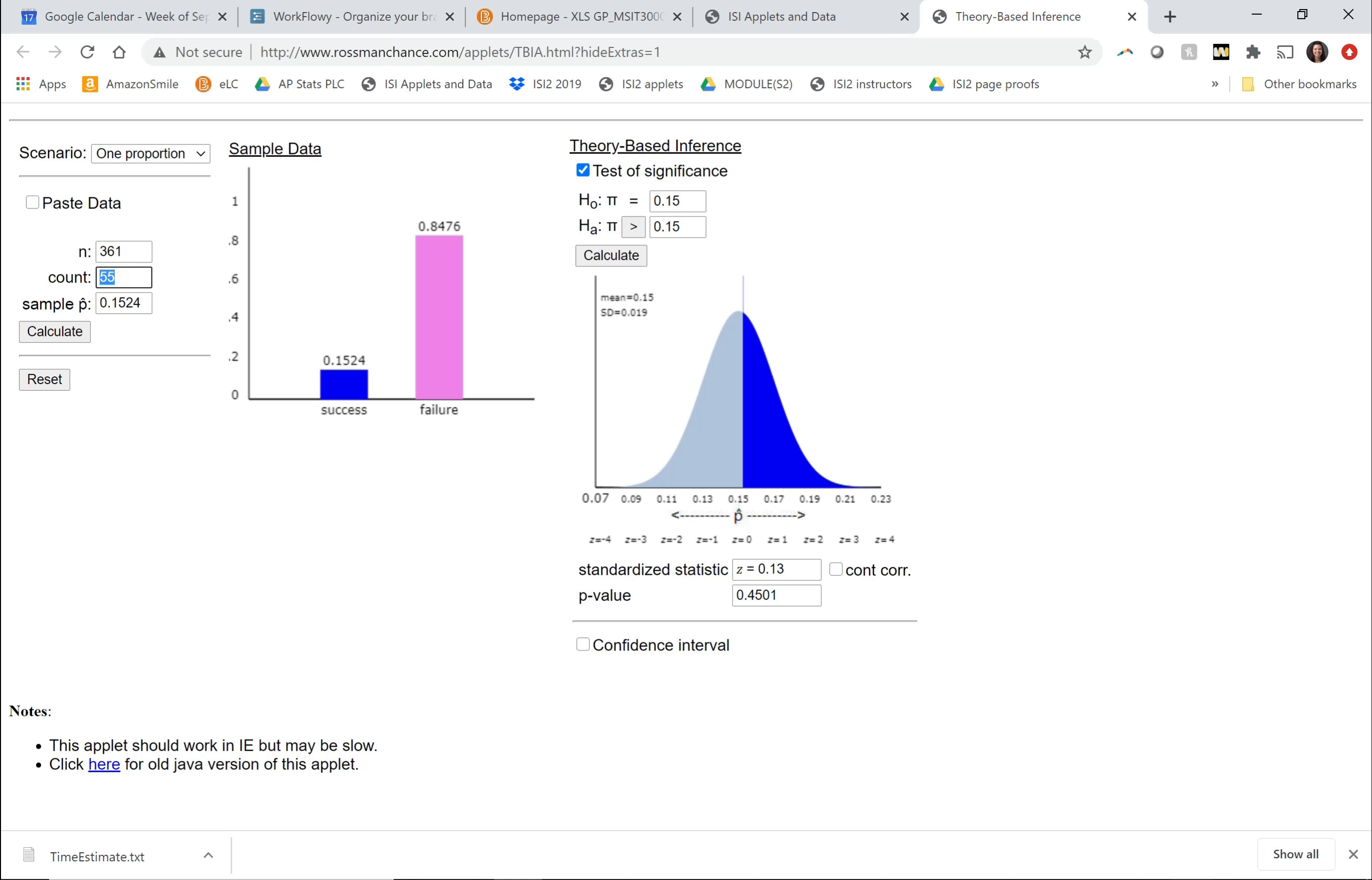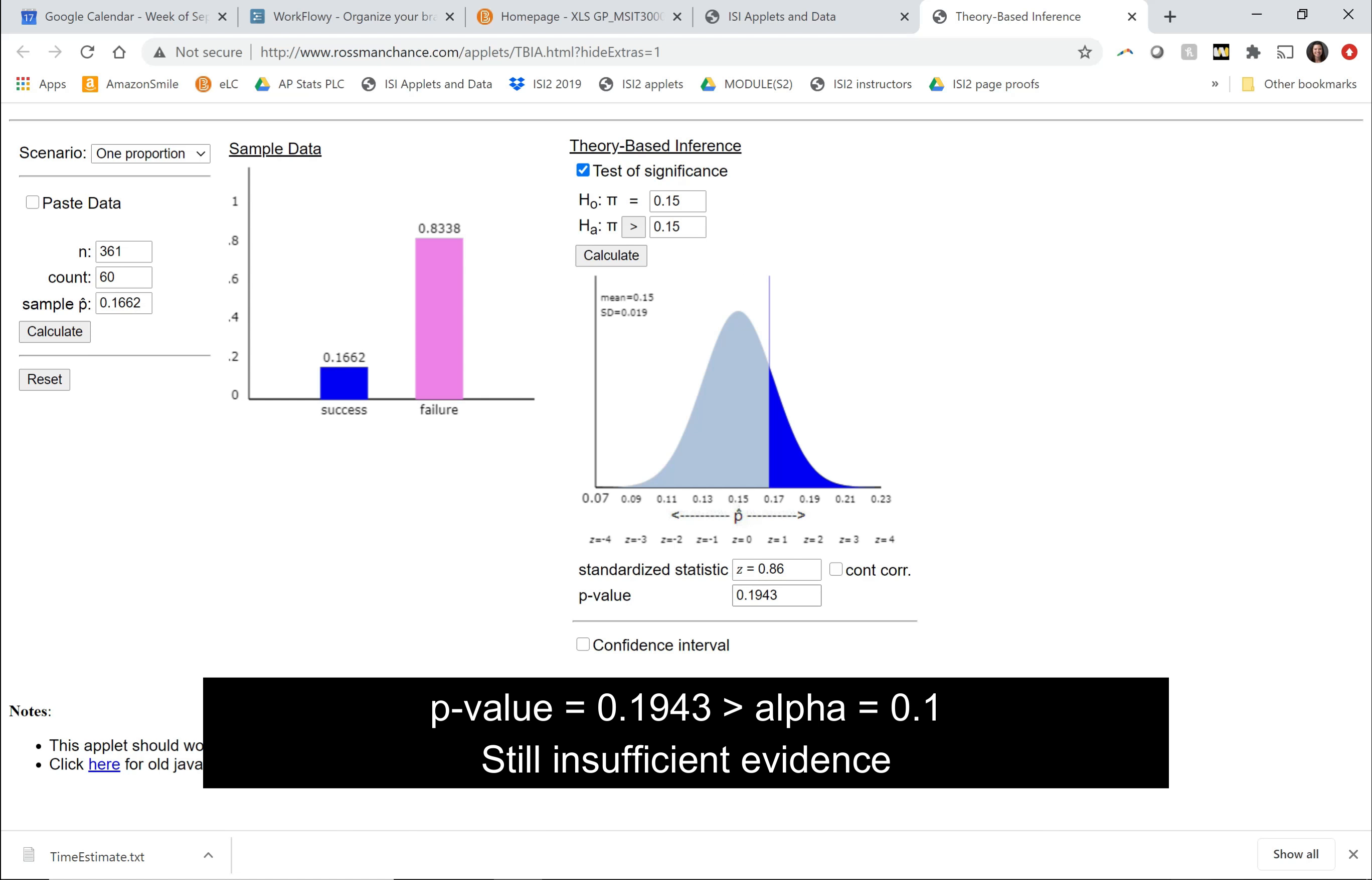What if we change the count? What if we did 60? Okay, so our evidence is stronger now. Our p-value is smaller, but it's still not small enough. We're setting our alpha level right now as 0.1. The p-value is greater than the alpha level. So that means that we don't have enough evidence.